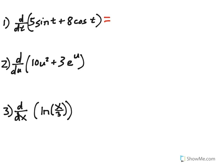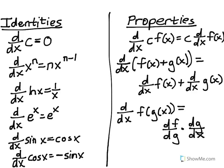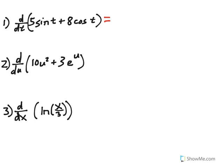Let's start working out the first problem: derivative of 5 sine t plus 8 cosine t. First, check for productive algebraic manipulation — in this case there isn't any. Next, we have an addition symbol here, and looking at our properties, if we have two functions added together, we can distribute the derivative operation. So we take this one big derivative and break it into two little derivatives.